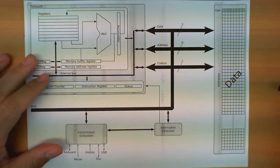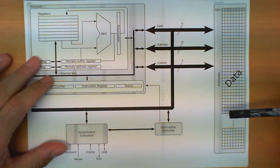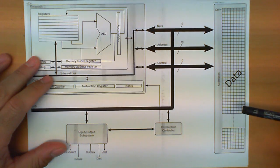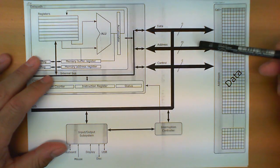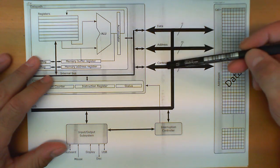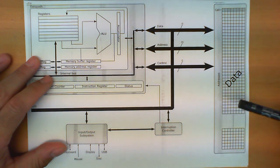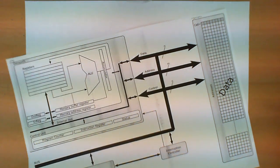In this video we're going to explain how the memory module works as part of this overall computer system. As we can see, it is connected to the rest of the system through three connections here: data, address and control, which we're going to be studying in a little bit more detail.